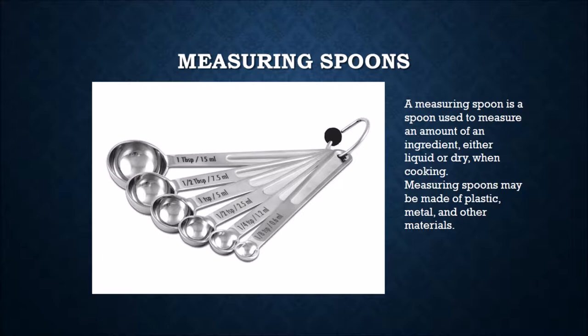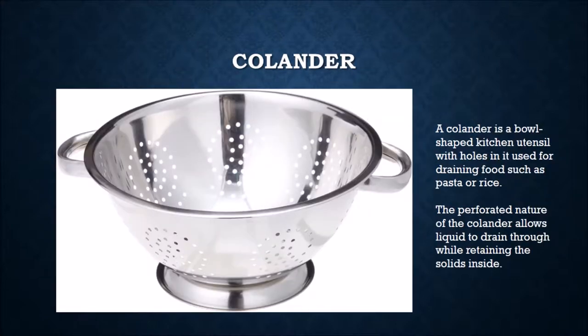Measuring spoons: a measuring spoon is used to measure an amount of an ingredient, either liquid or dry, when cooking. Measuring spoons may be made of plastic, metal, or other materials. A colander is a bowl-shaped kitchen utensil with holes in it, used for draining food such as pasta or rice. The perforated nature of the colander allows liquid to drain through while retaining the solids inside.